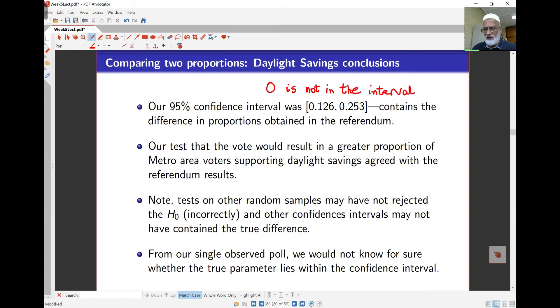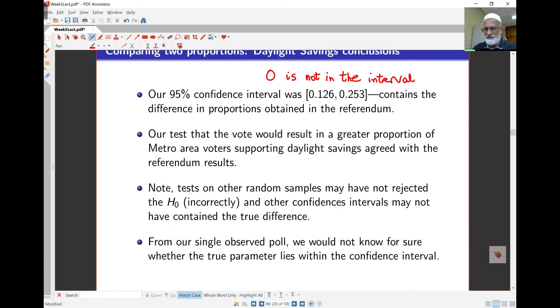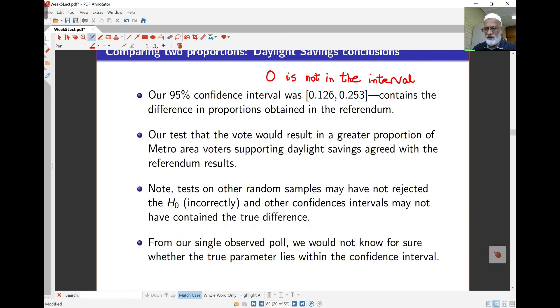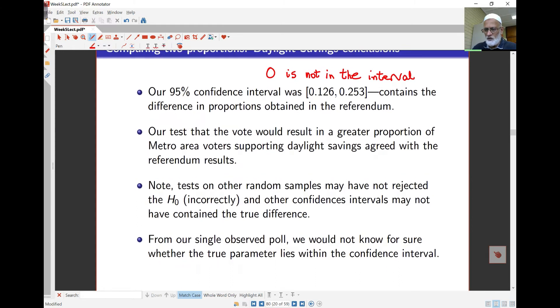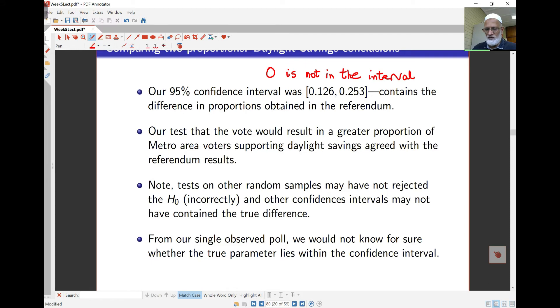So in our test, we found essentially, because it is metro minus regional, that metro, the proportion of voters who say yes are higher. And of course, this is just based on one sample, so other samples may have other results.